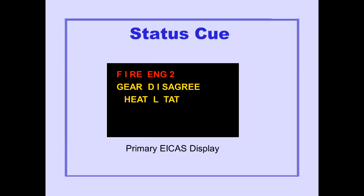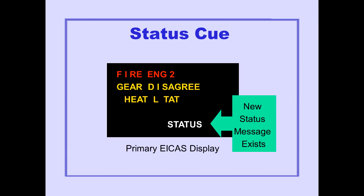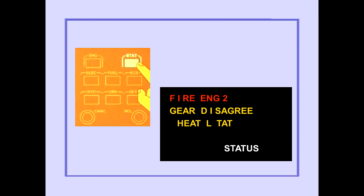If the status display is not being viewed and a new status condition occurs, a status queue is displayed on the primary ICAST display at the bottom of the message area to indicate that a new status message exists. Pushing the status display switch causes the status display to appear with the new status message at the top of the message area, followed by any previous status messages that still apply. The status queue on the primary ICAST display is no longer displayed.